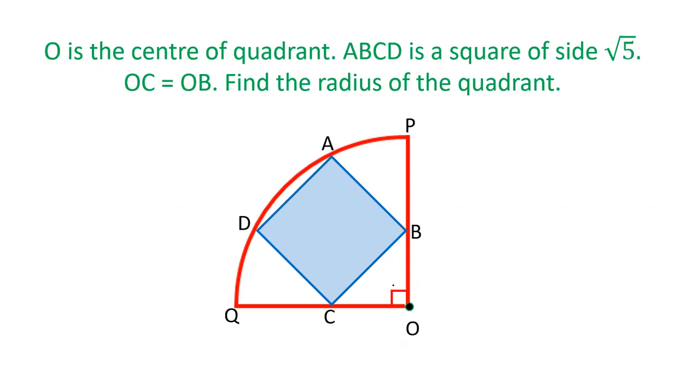In this video we have a question of a quadrant. There is a quadrant of the circle, that is one-fourth of the circle. This angle is 90 degrees. Inside this quadrant there is a square ABCD such that B, C, A and D - all the four points lie on two sides, two radius and on the arc.